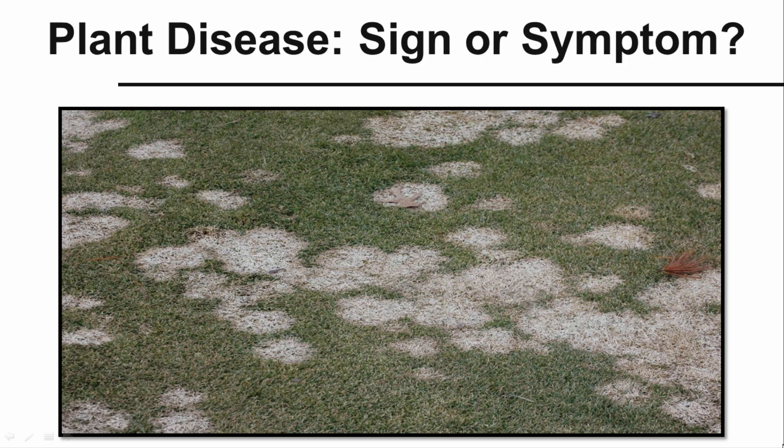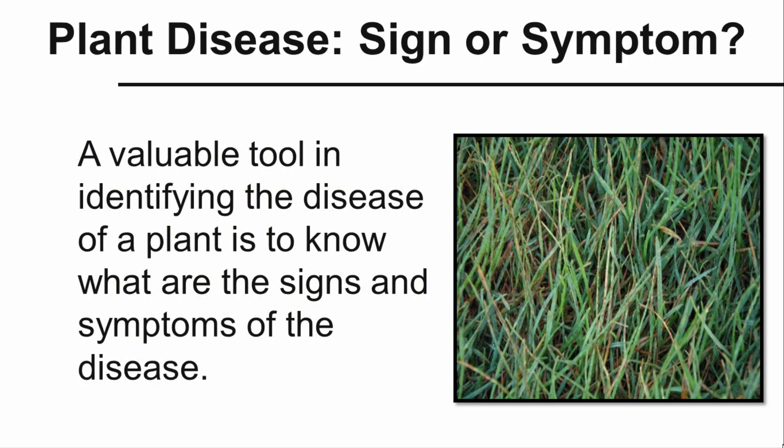One of the keys to identifying plant diseases is to know the signs and symptoms of that disease that are expressed on a particular plant. What is the difference between a sign or a symptom? It's a very valuable tool in identifying the disease. In this particular illustration, we see these lesions on turf grass plants, and it helps us to identify what that disease is.